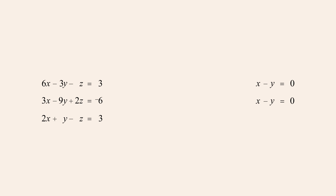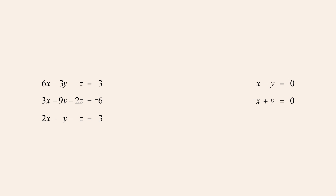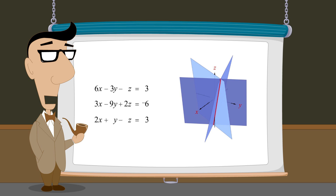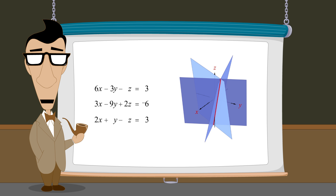We can then try to solve the system of two equations in two variables to find the values of x and y. But when we multiply the second equation by negative one and add the equations, both the x and y terms are eliminated, resulting in the equation zero equals zero. As a general rule, if we start with a consistent system of three linear equations in three variables and by eliminating variables we obtain an equality between two equal numbers, then this indicates that the system has an infinite number of solutions.